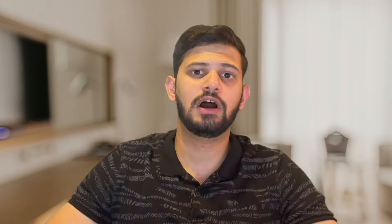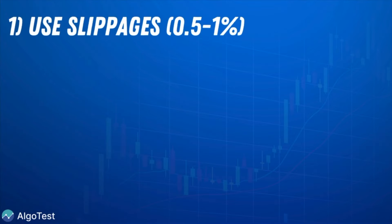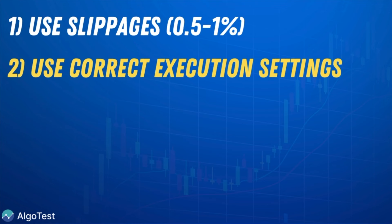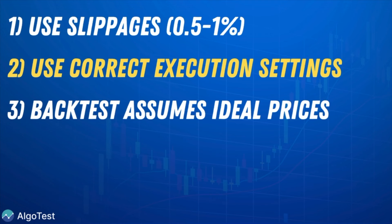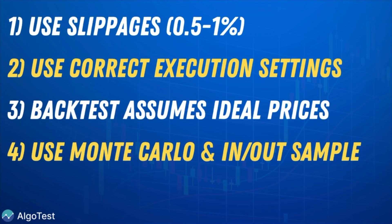Additional Pointers. If you've stuck around this long, give yourself a pat on the back — you're definitely a serious trader. Here are some points to help improve your overall execution and strategy building. 1. Use slippages — somewhere around 0.5 to 1% is a good starting point. 2. Use the correct execution settings for the type of strategy you're executing. 3. Always remember: the backtest assumes you get the most ideal prices, but slippages will always exist in the live market and must be accounted for. 4. Make sure your strategy is not curve-fit or over-optimized — make use of the in-sample/out-sample as well as the Monte Carlo drawdown simulation features on AlgoTest when backtesting.